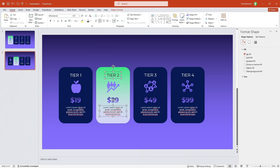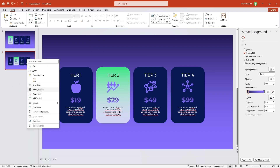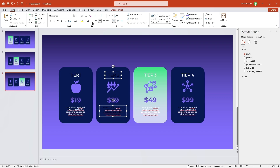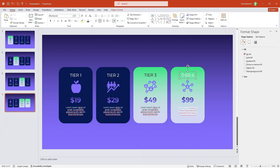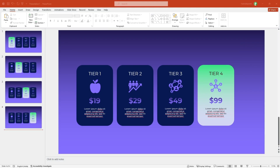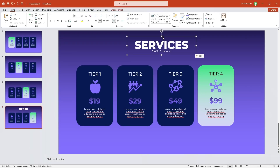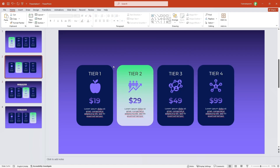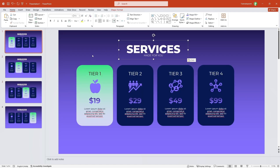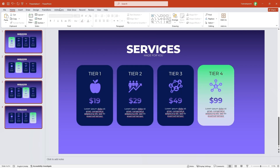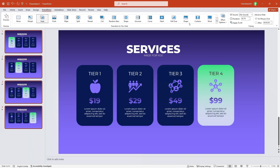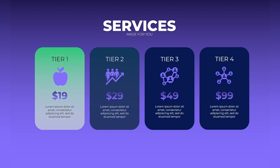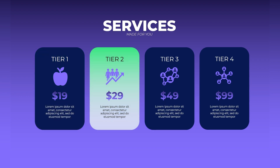Now I'll duplicate the slide again and do the same for the third and fourth cards quickly. We can add some more text — let me quickly paste some text, align it properly to the center, and paste it across all the slides. Now let me select all the slides, go to Transitions, select Fade, and change the duration to 1.25 seconds. And we have built this beautiful cards presentation step by step from complete scratch.